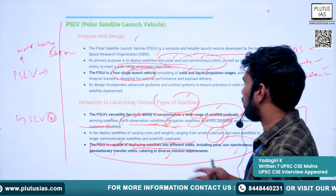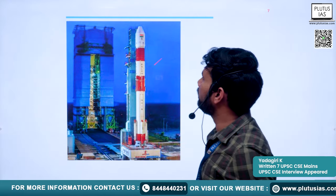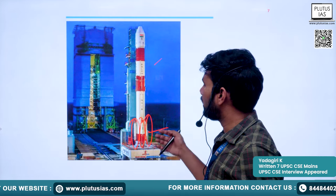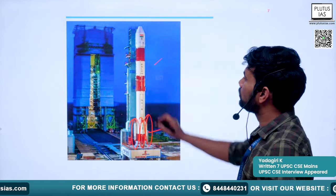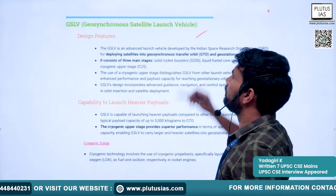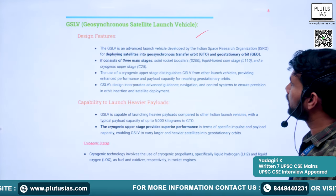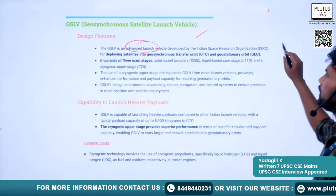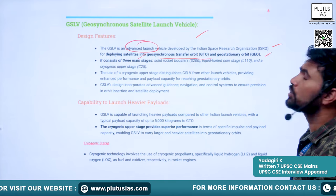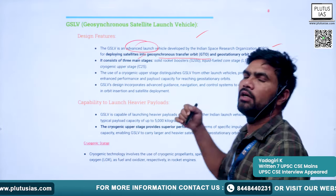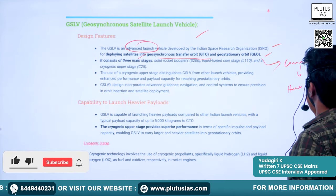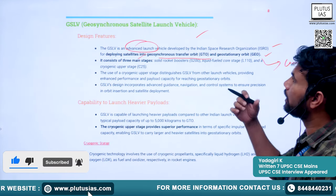PSLV is rightly called the workhorse of ISRO. The strap-on boosters visible in its image change in number and size according to mission need. Next is GSLV — the Geosynchronous Satellite Launch Vehicle — an advanced launch vehicle developed by ISRO used for deploying satellites into geosynchronous transfer orbit and geostationary orbit. The communication satellites placed in these orbits are very heavy.